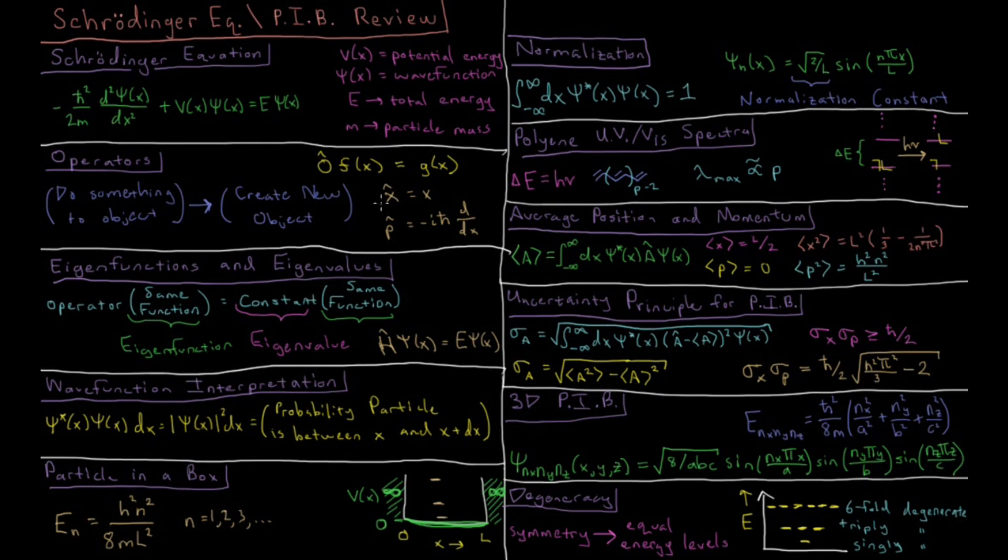Some particular operators we'll be interested in are position, which is just multiplying times x, and momentum, which is minus i h-bar times the first derivative with respect to x. So it will differentiate this function here.